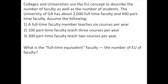Now let's look at an example that isn't really a product or job. Colleges and universities use the equivalent unit concept to describe the number of faculty and students. The University of Georgia has about 2,000 full-time faculty and 400 part-time faculty. Assume that a full-time faculty member teaches six courses per year; 100 part-time faculty teach three courses per year — that will be our half-time faculty; and 300 part-time faculty teach two courses per year, which is one-third of full-time. What is the full-time equivalent faculty — the number of equivalent units of faculty?